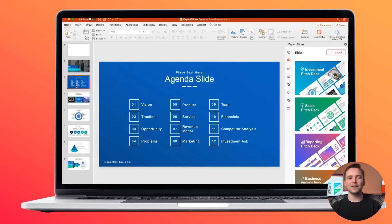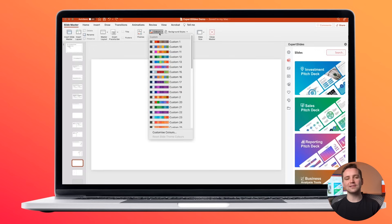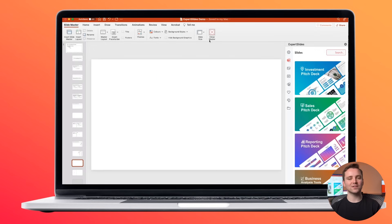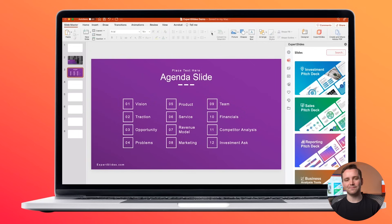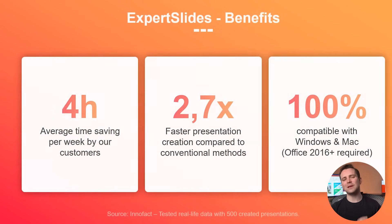Now let's switch the overall color of the entire presentation. We can do that in the slide master — just select the color. You can also use your specific corporate identity color. And that's it — now all slides are purple.